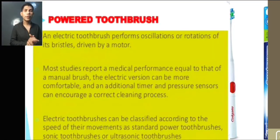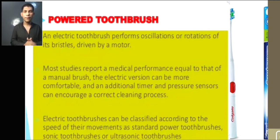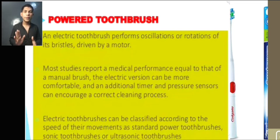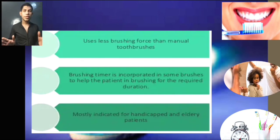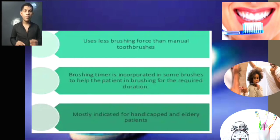Powered toothbrushes: the electronic toothbrush performs oscillation and rotation of the bristles via a motor. They have more studies, reports, and medical performance data compared to the manual brush. The electronic version can have additional features like a timer and pressure sensor to encourage correct cleaning. Electronic toothbrushes can be classified according to speed. The sonic toothbrush has the ability to restrict excessive tooth brushing force and is mostly indicated for handicapped and elderly patients.